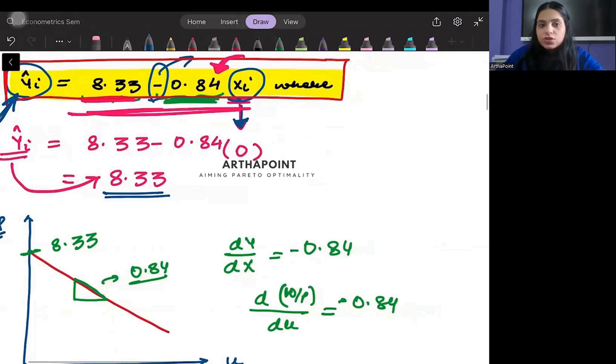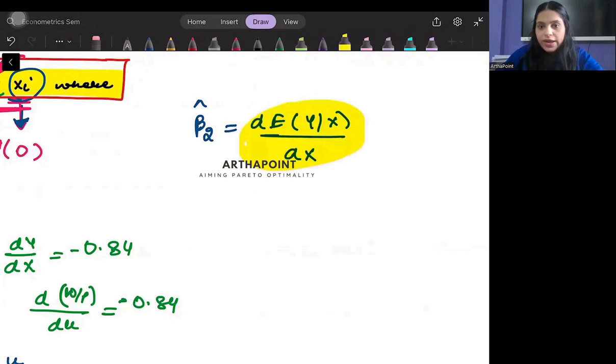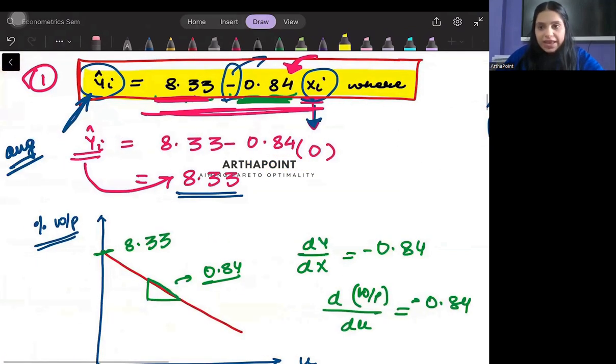So ideally in a regression equation whenever we talk about beta 2 hat, it says what is the change in the expected value of y when x changes. So this basically represents the change in expected value of y when there is a change in the x.